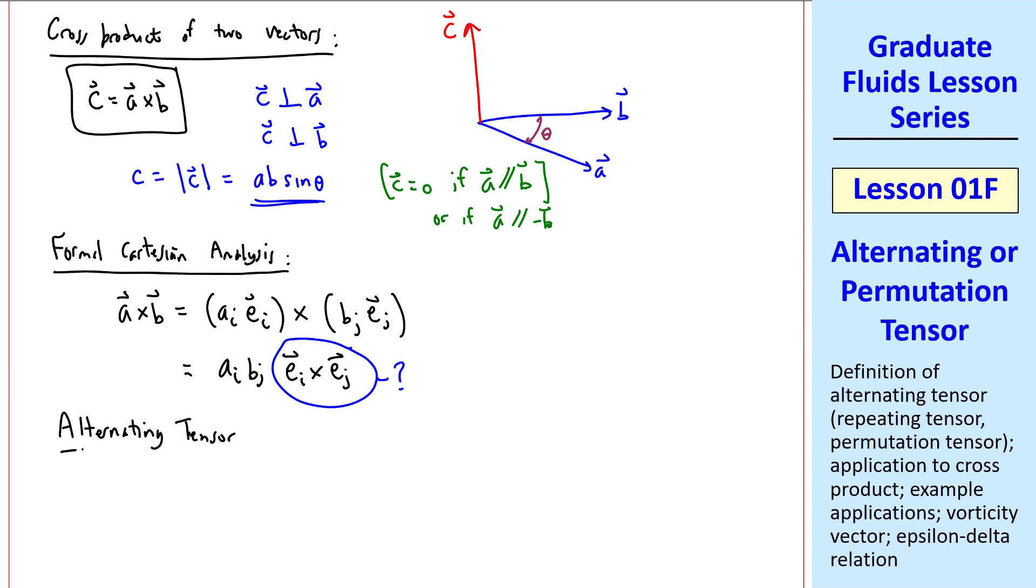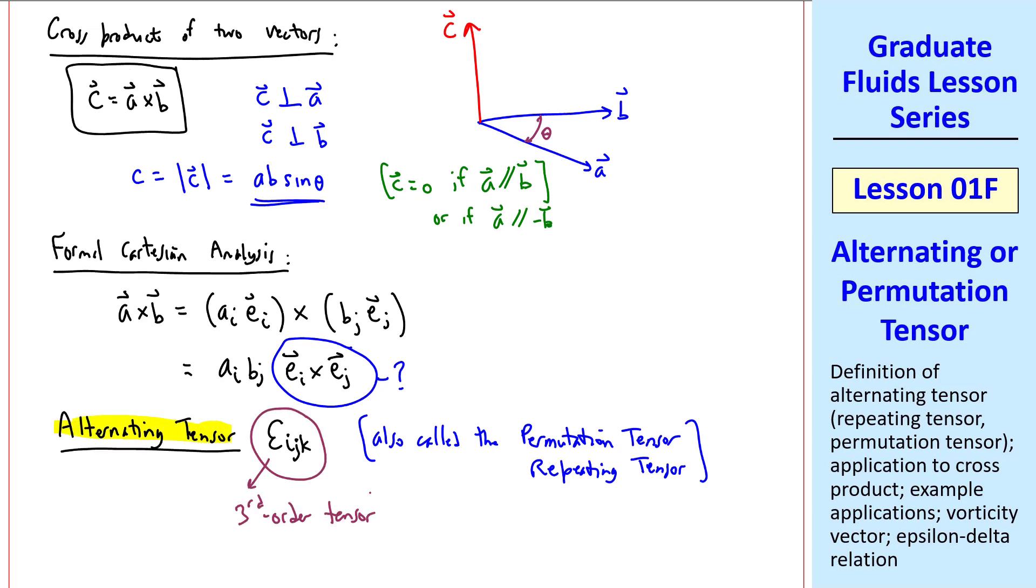To evaluate this, we'll introduce the alternating tensor, epsilon_ijk, also called the permutation tensor or the repeating tensor. We see that epsilon_ijk is a third-order tensor, so it has 27 components.